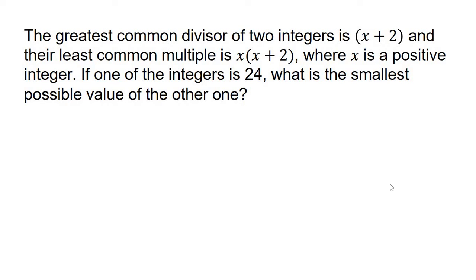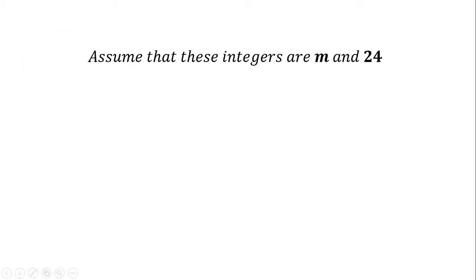Hello everyone, welcome back. Today in this video I'm going to be solving this example. The greatest common divisor of two integers is x plus 2, and their least common multiple is x times (x plus 2), where x is a positive integer. If one of the integers is 24, what is the smallest possible value of the other one?